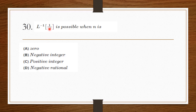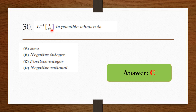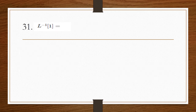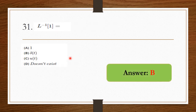The inverse Laplace transform of 1/s^n is possible when n is a positive integer, so option C is the right answer. The inverse Laplace transform of 1 is the unit impulse function δ(t).